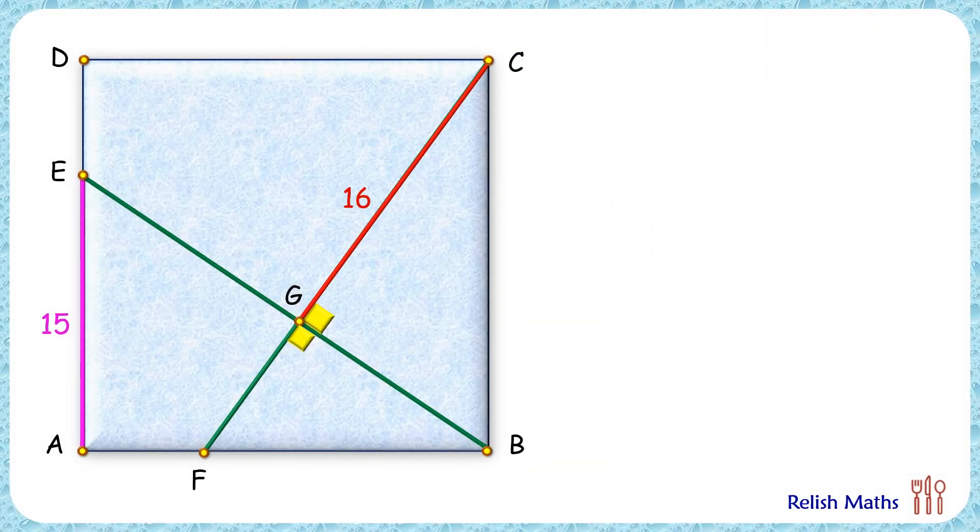Let's check the solution. Let's assume that each side length of the square is x cm. Here this angle is alpha degrees and this angle is beta degrees. Alpha and beta together equal 90 degrees.